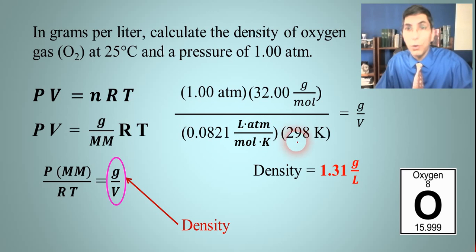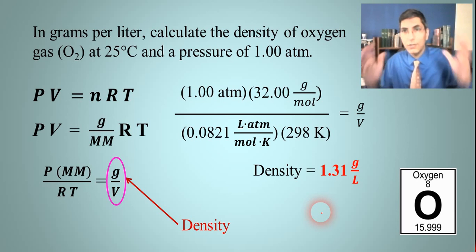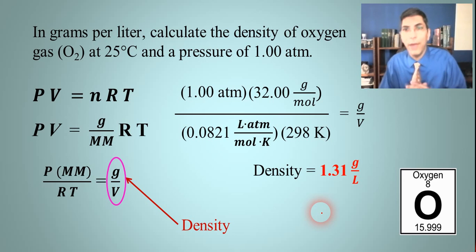We can cancel out those units and find that the only units left are grams per liter. So that's the density of oxygen gas at those conditions. That means if you get oxygen gas in a balloon and you have maybe one liter, well one liter of that oxygen gas is going to be 1.31 grams. That's a pretty neat calculation considering that all we had here was the ideal gas law and a few other numbers.